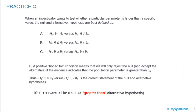The correct answer is B. A positive hope-for condition means we will only reject the null and accept the alternative if the evidence indicates that the population parameter is greater. Recall that formulation two states: the hypothesis is less than or equal to zero versus the alternative greater than. So when the question states that an investigator wants to test whether a particular parameter is larger than, we use B as the correct format.